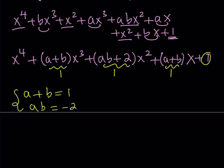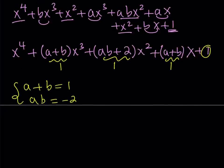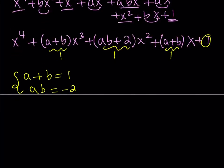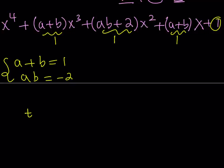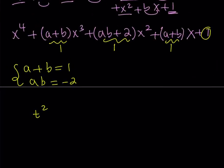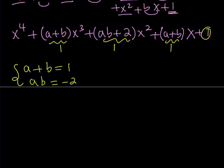This tells us that a and b are the roots of a quadratic equation. Using Vieta's formulas, we can write that equation as t squared minus the sum of the roots, which is one, times t minus the product, which is negative one — wait, the product is negative one, so we get t squared minus t minus one equals zero.